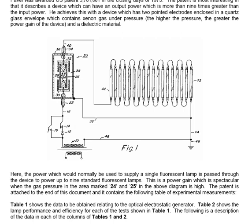This is a power gain which is spectacular when the gas pressure in the area marked 24 and 25 in the above diagram is high. The patent is attached to the end of this document and it contains the following table of experimental measurements.